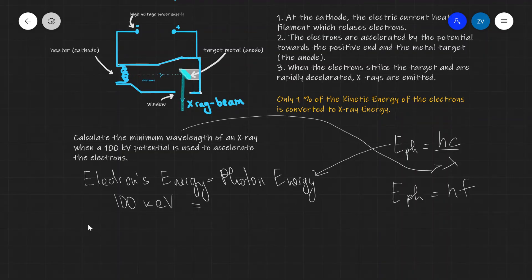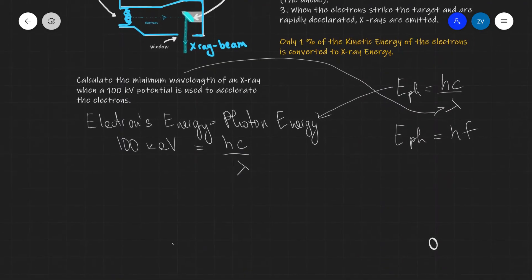So anyways, let's set the electron energy, which is 100 kilo electron volts, to hc over lambda, like that. Let's just do a quick conversion. So 100 kilovolts is actually going to be 100 times kilo is 10 to the power of 3, multiply that by the elementary charge, so 1.6 times 10 to the power of minus 19, and this will be equal to hc over lambda.